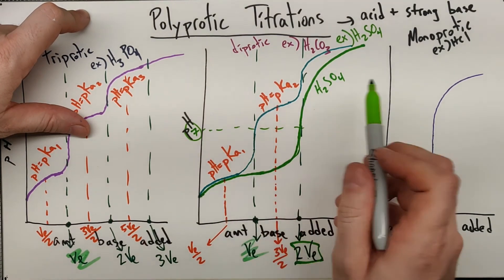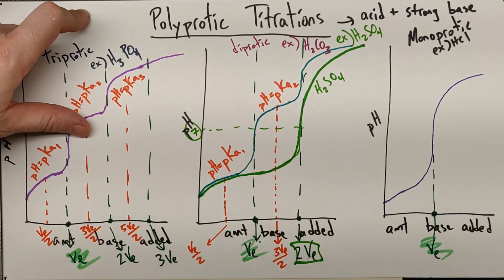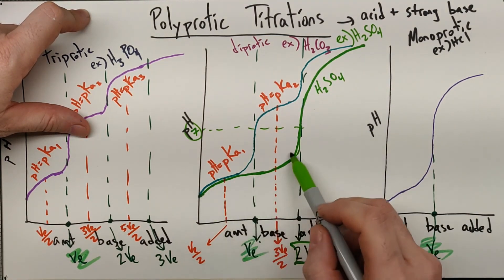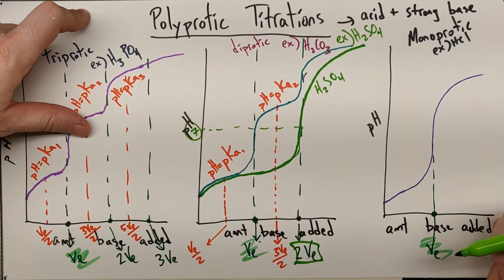So for a normal diprotic acid, you'd end up jump at the equivalence volume, then jump again the second time. For H2SO4, it titrates essentially so both Hs come off at once, and that equivalence point happens at two times the equivalence volume.